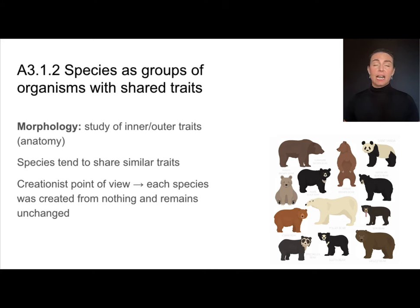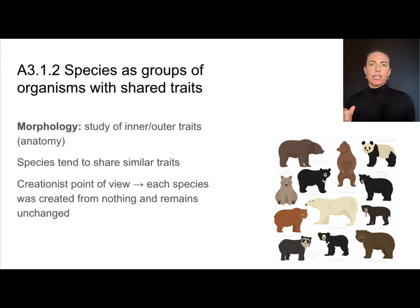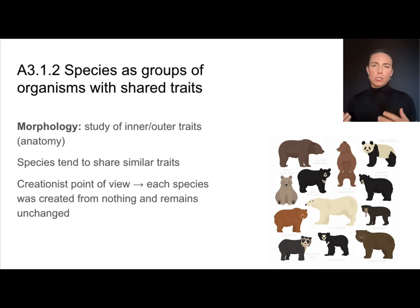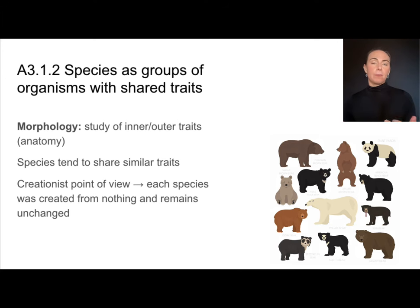Since this video is about species diversity, we need a good understanding of what exactly a species is. Species is much more complicated to define than we originally thought. From a creationist point of view, each species was created and then nothing changes. We have lots of evidence to the contrary. A lot of species were defined based on their morphology — their anatomy, how they looked. But one of the things we know about biology is that species also change over time, so defining them by just how they look right now might not be the most reliable approach.